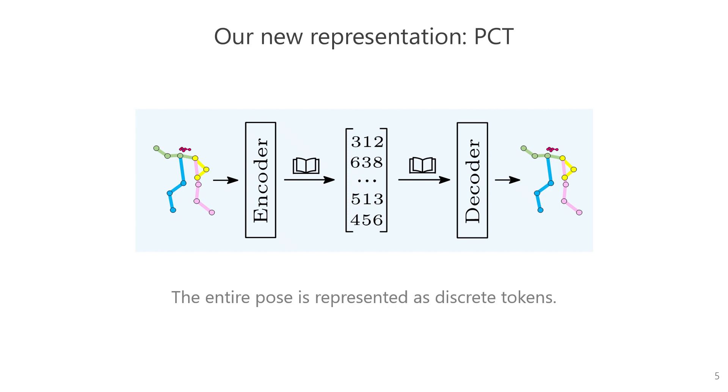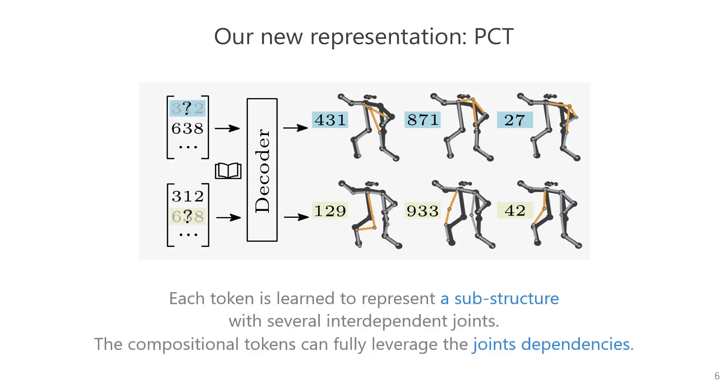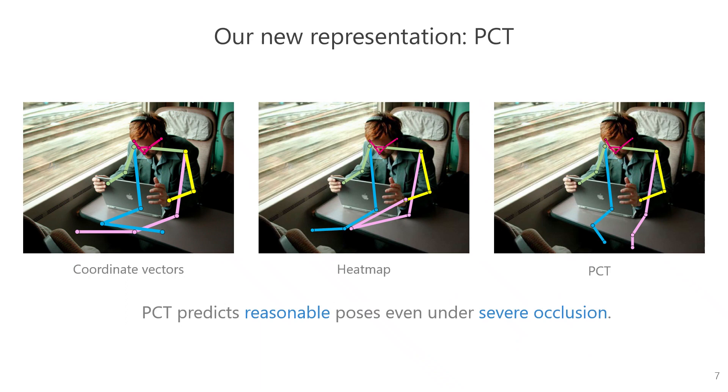we propose a novel holistic representation for the human pose called Pose Compositional Tokens, or PCT for short. We encode the entire pose into discrete tokens through training the encoder, decoder, and codebook. By using it, each token is learned to represent a substructure with several interdependent joints. The compositional tokens can fully leverage the joint dependencies. As a result, our method predicts reasonable human poses even in scenarios involving severe occlusion.